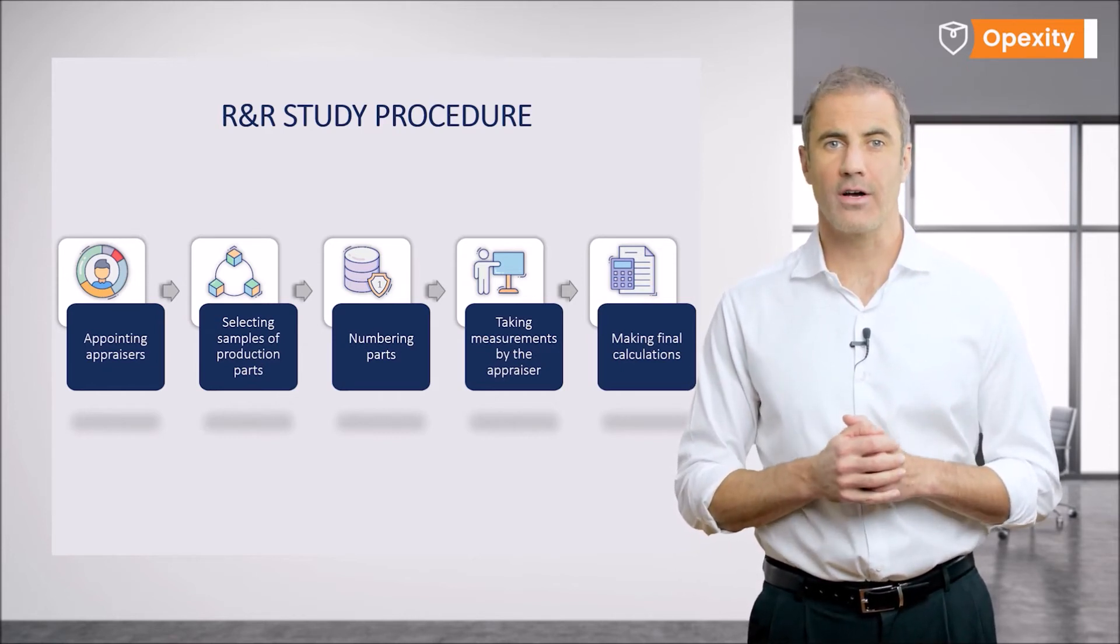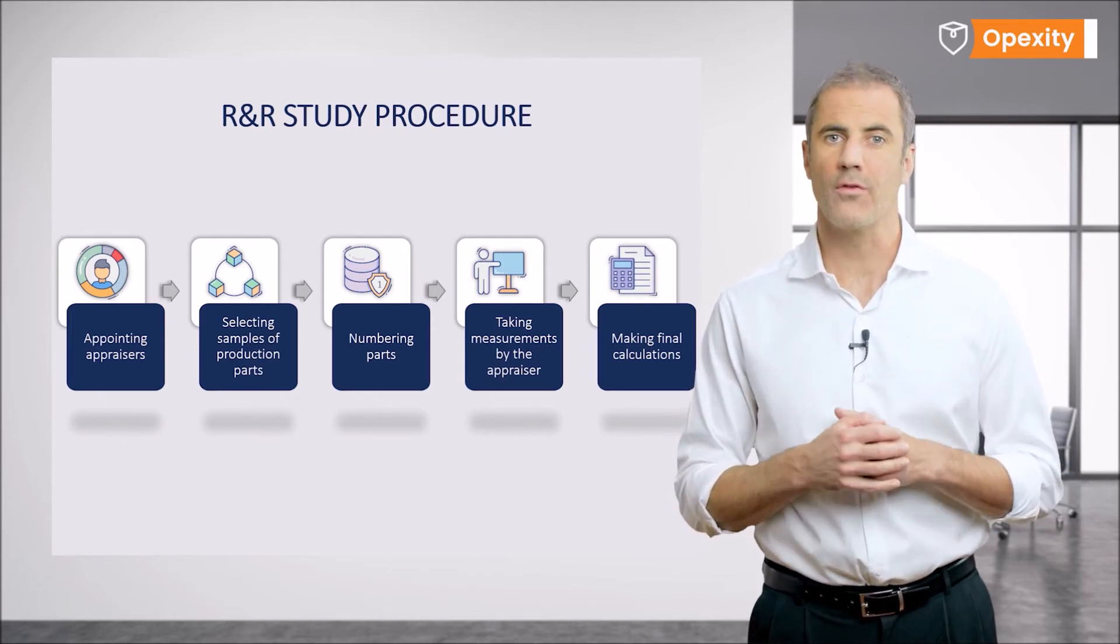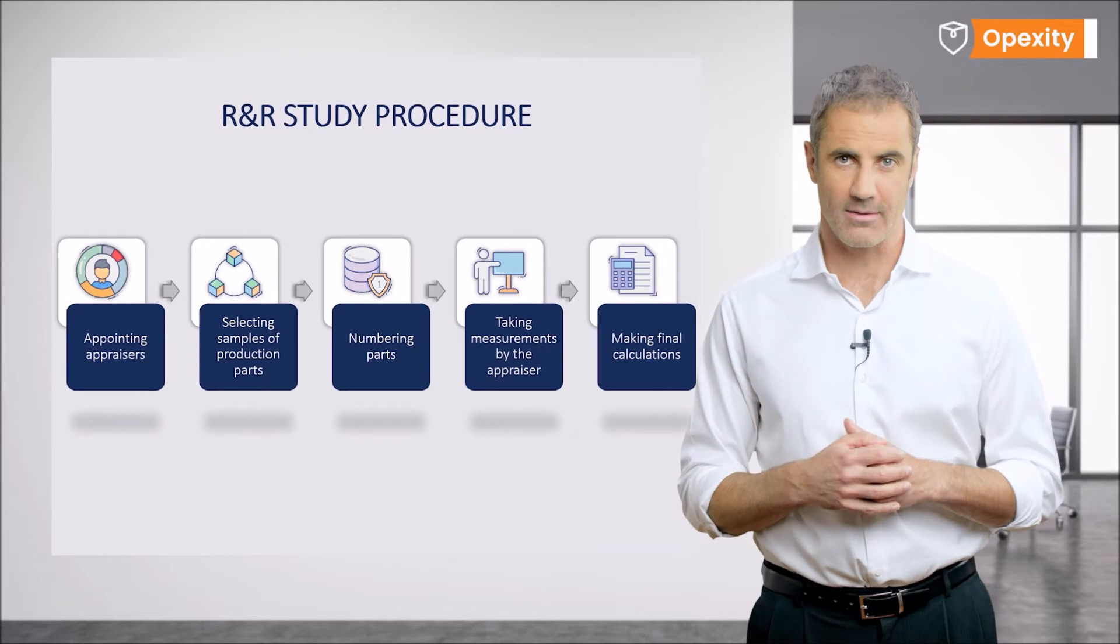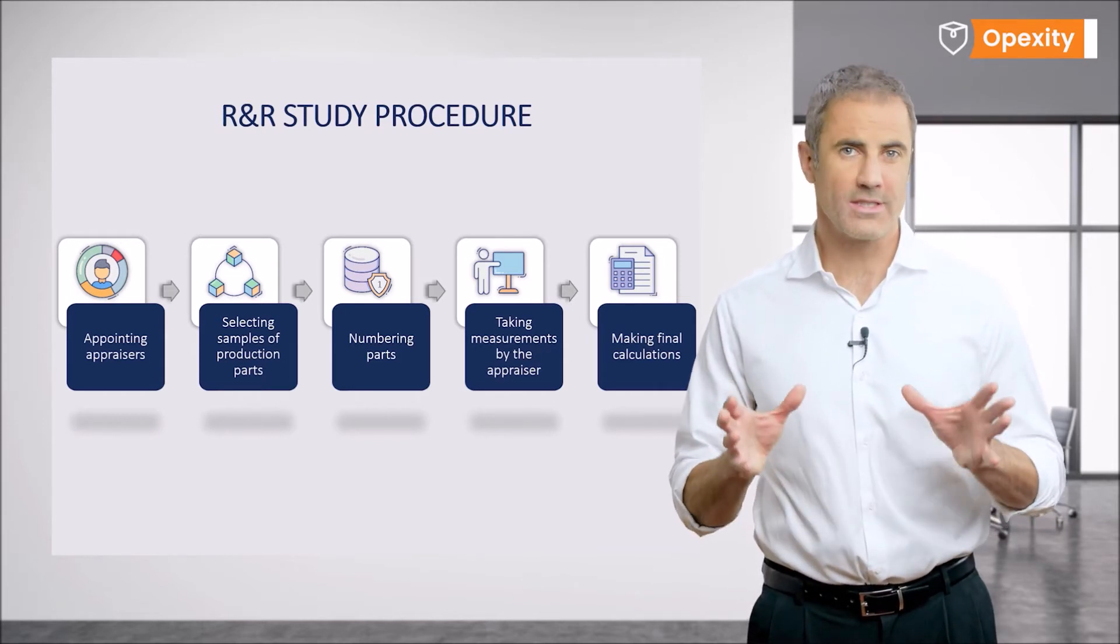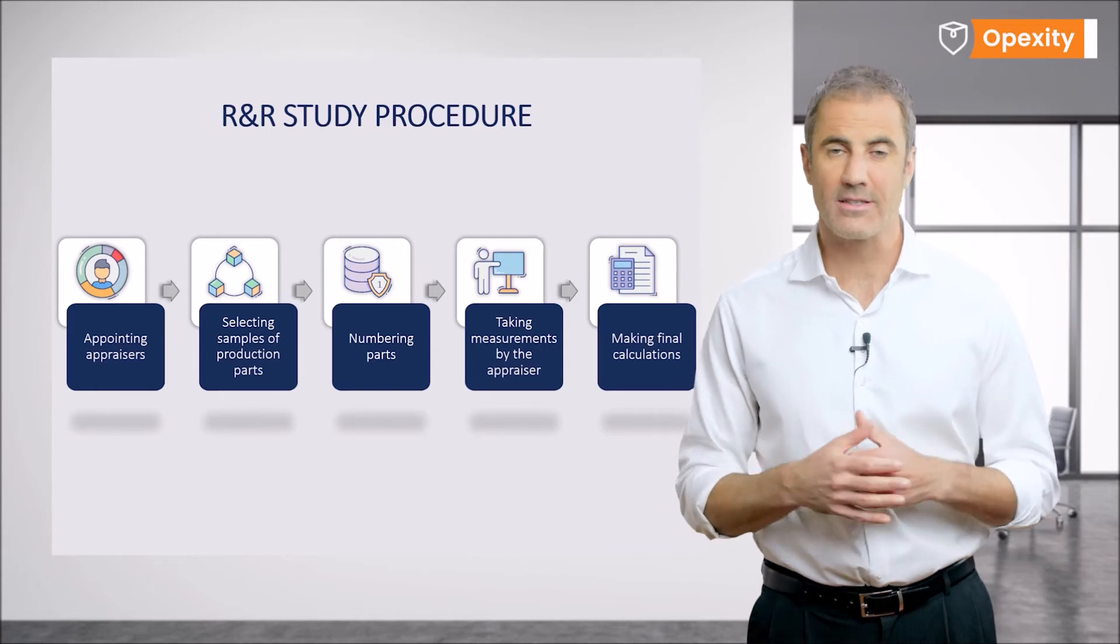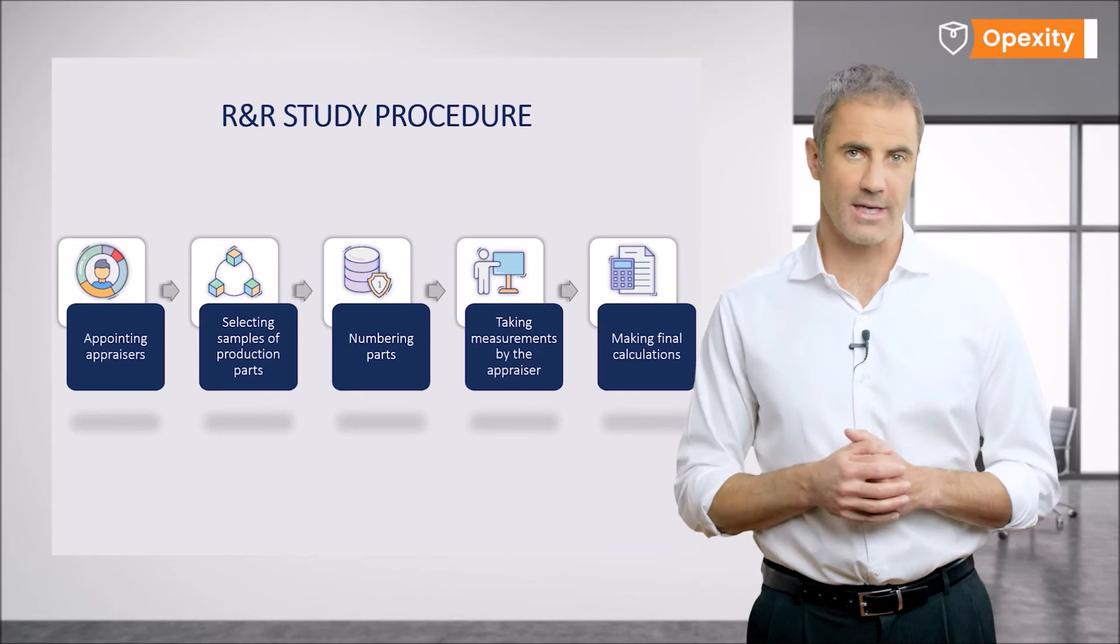Finally, gauge R&R calculation. This is the phase that takes place upon collection of all data and is conducted by the study leader, for instance, a metrologist. Once the statistical parameters are calculated, means, ranges and variability, the study leader interprets the results obtained.